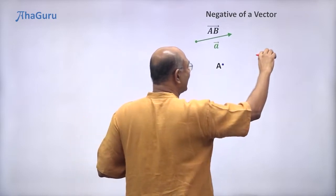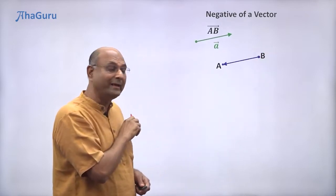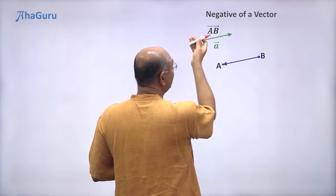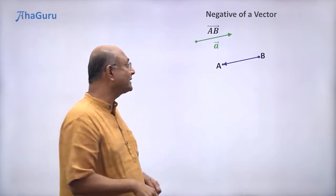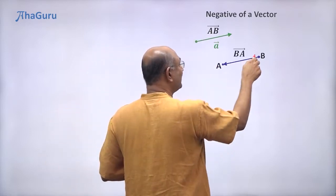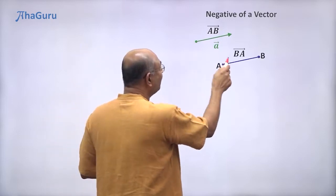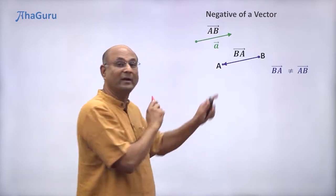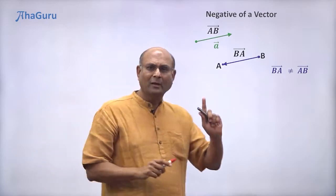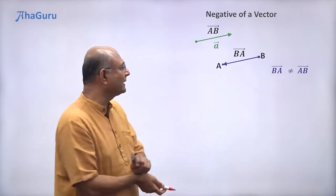But suppose now I start at B and end at A. Is this vector the same as that vector? No. They are in opposite direction. So clearly I should be calling it a different name, BA vector. And BA vector is not equal to AB vector. They are not equal. But there is some close relationship between them.